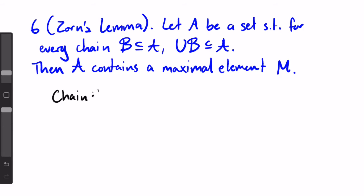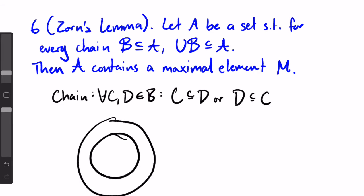b is called a chain, if and only if, for any c and d in b, either c is a subset of d, or d is a subset of c. I like to visualize a chain as the nested rings of a tree. Each ring is totally enclosed within every ring outside of it, and it totally encloses every ring inside of it.